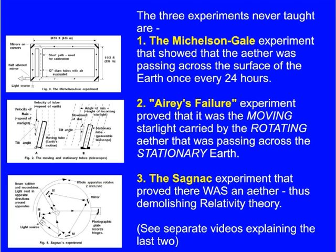The other three experiments are never taught at universities. They are: one, the Michelson-Gale experiment that showed that the ether was passing across the surface of the earth once every 24 hours; secondly, Airy's failure—this experiment proved that it was the moving starlight carried by the rotating ether that was passing across the stationary earth; and thirdly, the Sagnac experiment—this proved that there was an ether, thus demolishing relativity theory. And I have made separate videos on these three experiments explaining how they work.